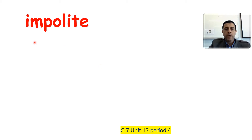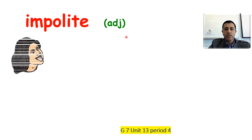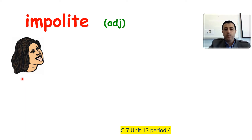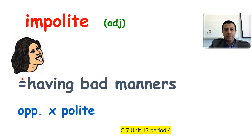Next, 'impolite.' Impolite is an adjective. Look at this picture — is this behavior polite or impolite? Impolite means having bad manners, because this is a bad manner. The opposite of impolite is polite. So the antonym of impolite is polite.